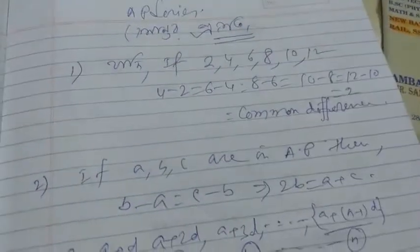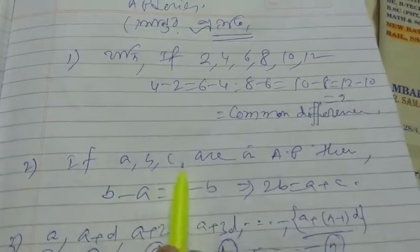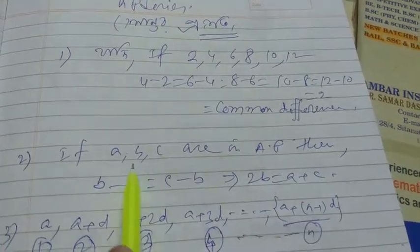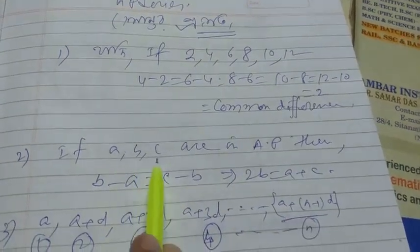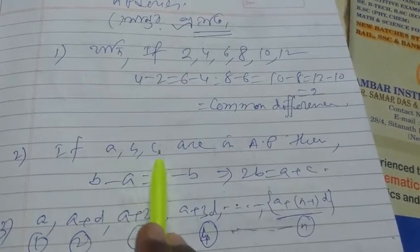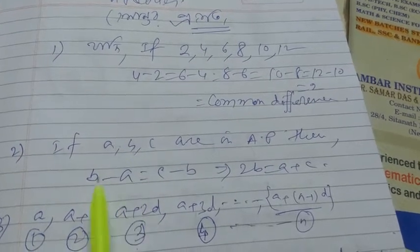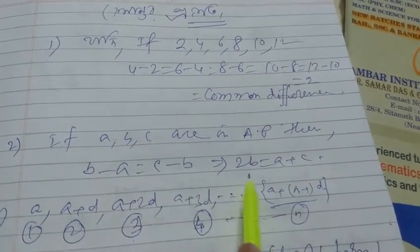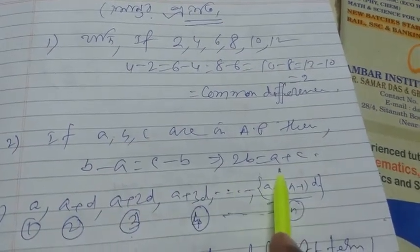Also, if three numbers a, b, c are in AP, then we know the differences are the same, so b minus a equals c minus b. You can write that as: 2b equals a plus c.